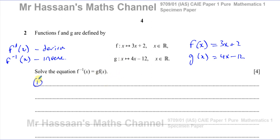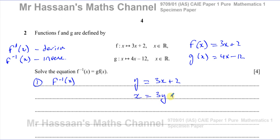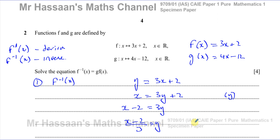First, let's find the inverse of f of x. The inverse of a function is what undoes that function. To find the inverse, we follow these steps: first, rename the function y, so write y equals 3x plus 2. Then replace the y with x and the x with y — switch them around. Wherever you see x, change it to y, and wherever you see y, change it to x. Then make y the subject, which will undo the function and give us the inverse.